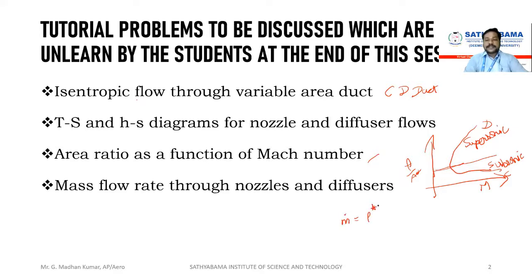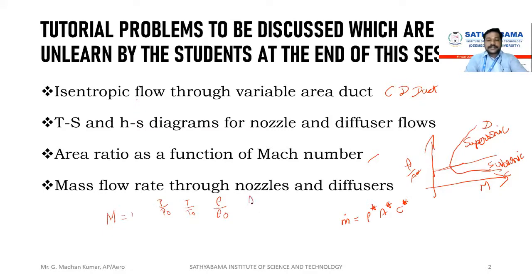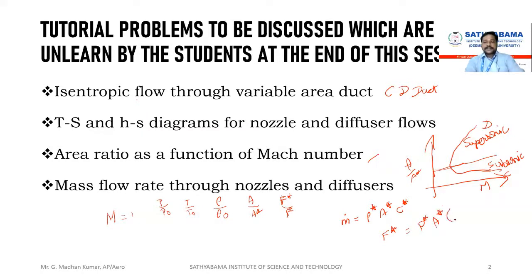For mass flow rate through the nozzle, we use ṁ = ρ*·A*·c*. The isentropic table gives, for different Mach numbers: T/T₀, p/p₀, A/A*, and f*/f. For each isentropic table these values are present. f* is defined as c*·A*, using the formula 1 + 1.2M² and related expressions.